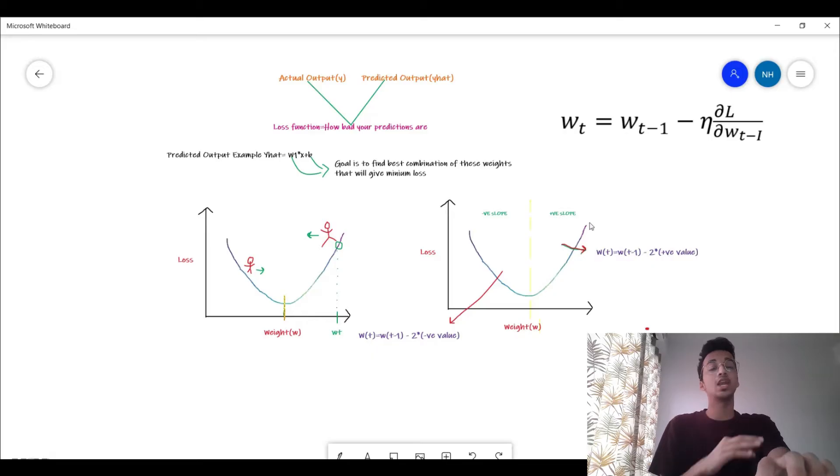Basically you're descending along the gradient to reach the minimum point. If you're at the right side of the curve you want to reduce the weight slowly so you get towards the bottom, and similarly if you're on the left side of this curve you want to move towards the right slowly so you reach the bottom and get the minimum loss possible.